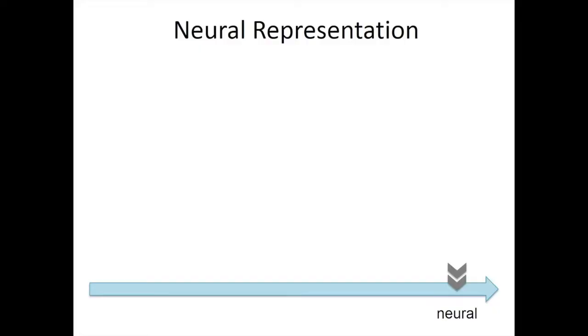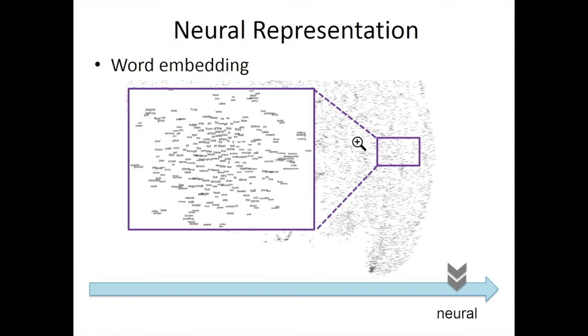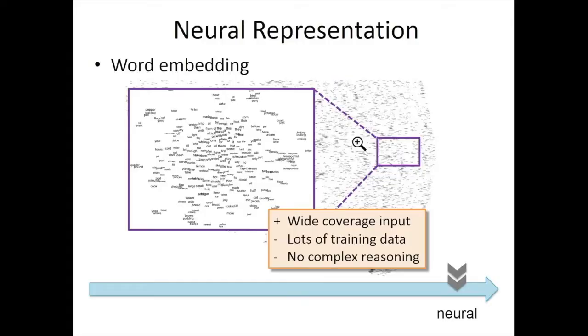On the other end of the spectrum lie neural representations. A very popular technique in deep neural model literature is word embedding — the idea being that words occurring frequently together appear close to each other in a high-dimensional space. This has been very popular, and people are achieving great results using deep neural models. But in order to achieve meaningful representations, we usually require lots of training data. And because they are not intuitive, it is very hard to interpret and explain them, making complex reasoning much harder.